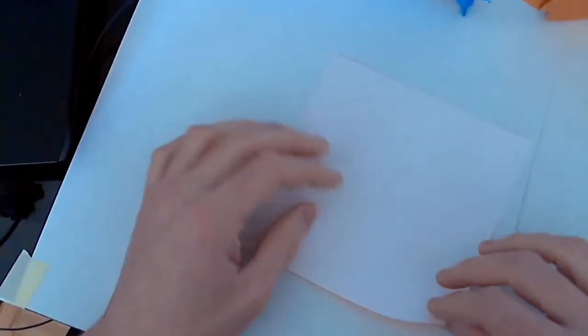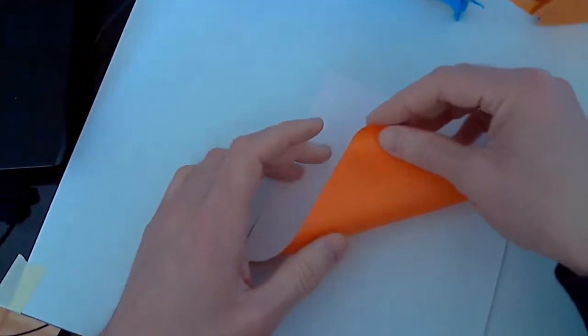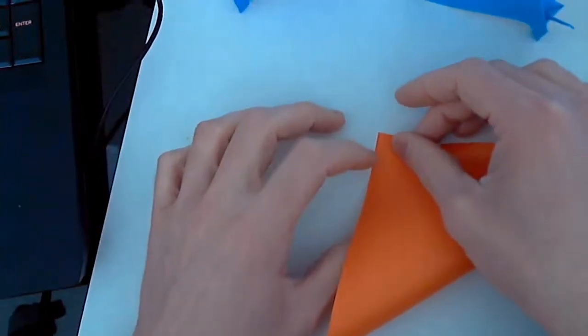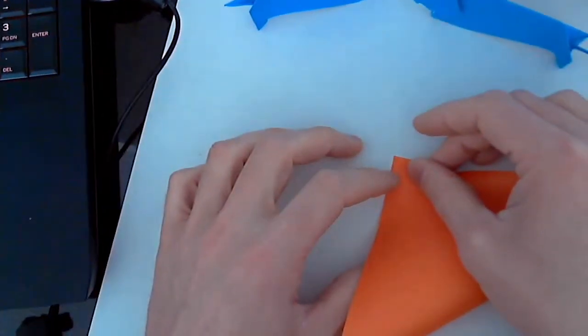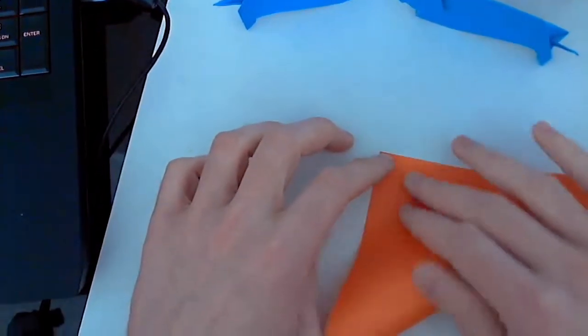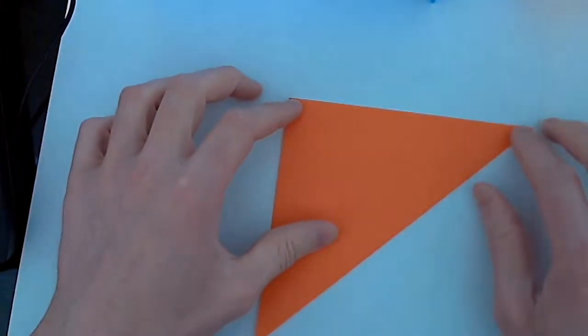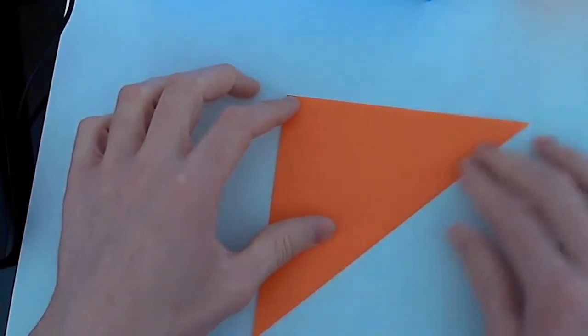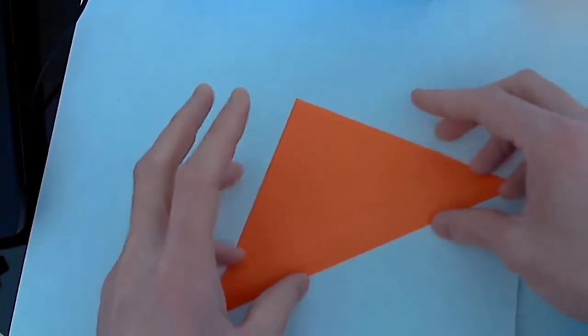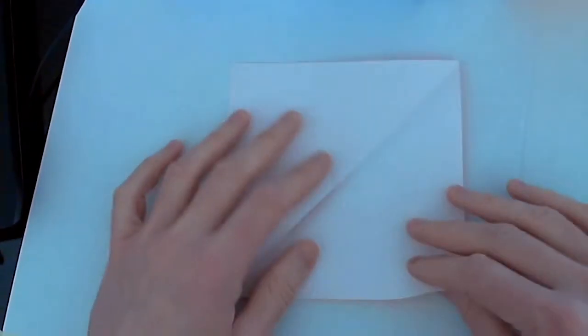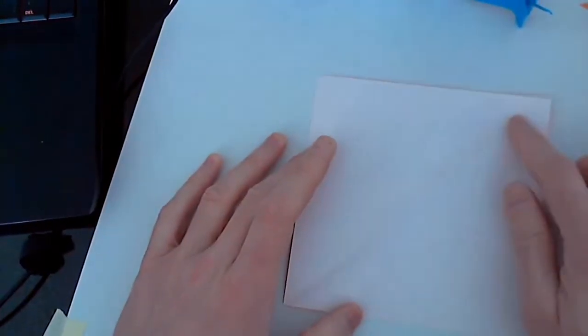Take one corner and fold it across to the opposite corner. Make sure they line up and make a nice crease along the diagonal. Open it up. Now we have a nice crease going through the center.